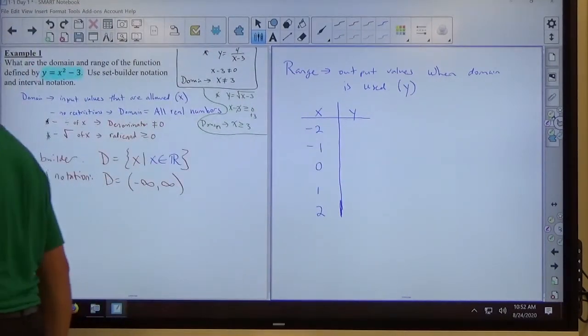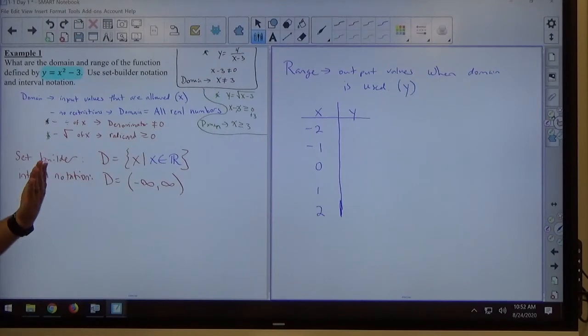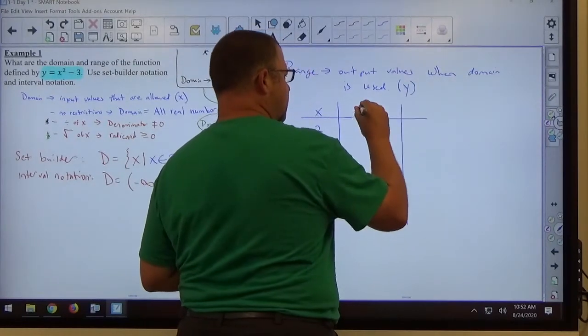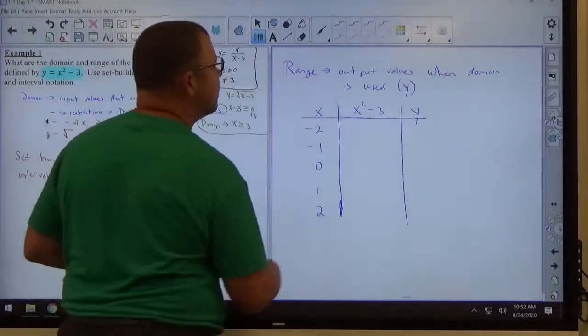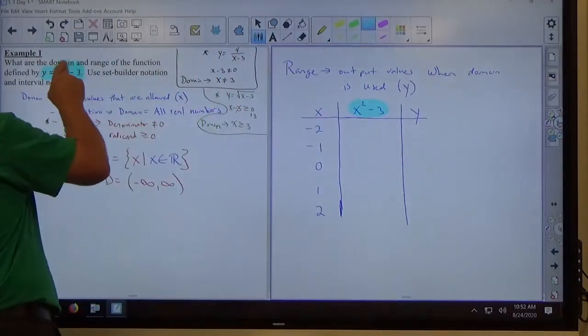Anytime I have all real numbers as my domain, I usually pick those values for x. They're small. They're easy to work with. They're easy to evaluate. I might even make a three-way chart here where I have an x there. I'm going to have x squared minus 3 here, and I'm going to have y here. Three columns. Where the middle column is simply the expression that y equals. That's what y equals right there, x squared minus 3.